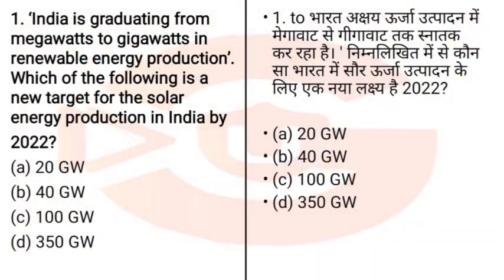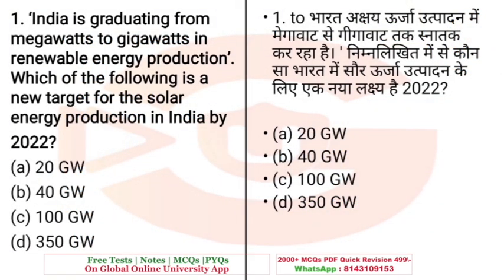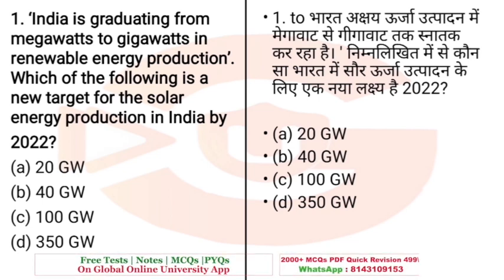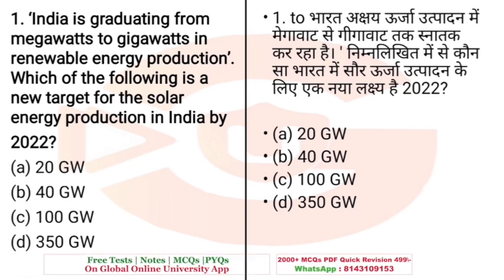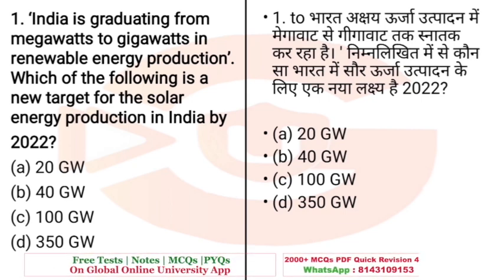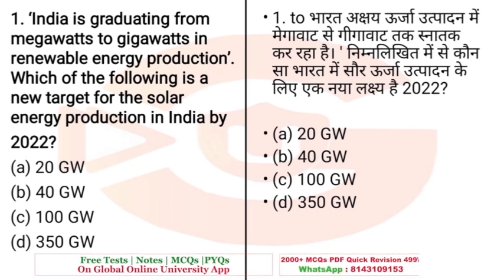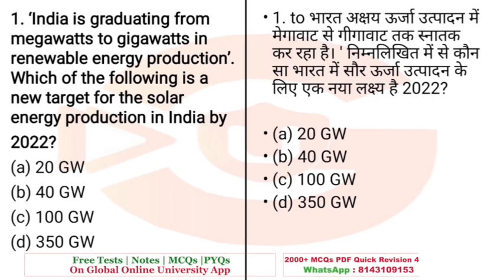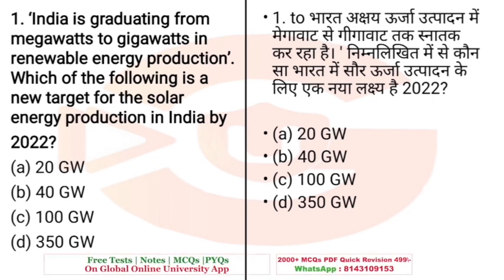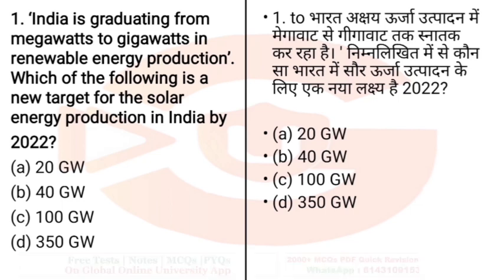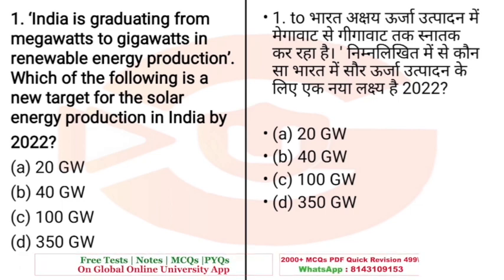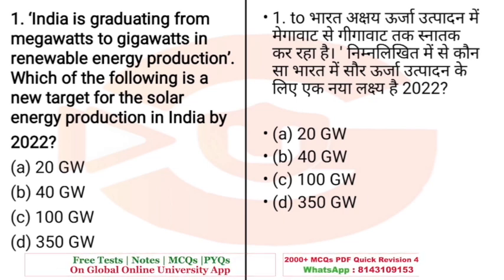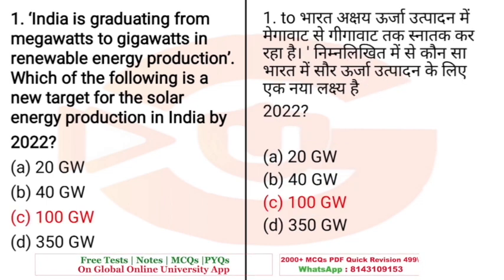Question: India is graduating from megawatts to gigawatts in renewable energy production. Which of the following is the new target for solar energy production in India by 2022? Options: A. 20 gigawatts, B. 40 gigawatts, C. 100 gigawatts, D. 350 gigawatts. India's 2022 target is 100 gigawatts.